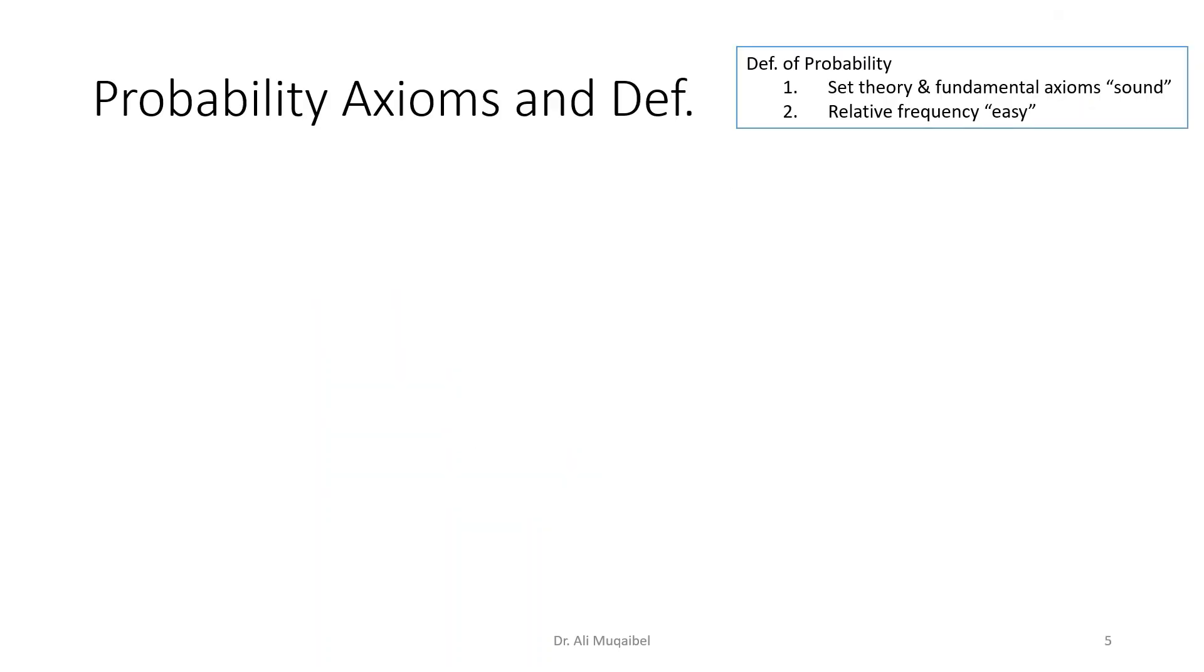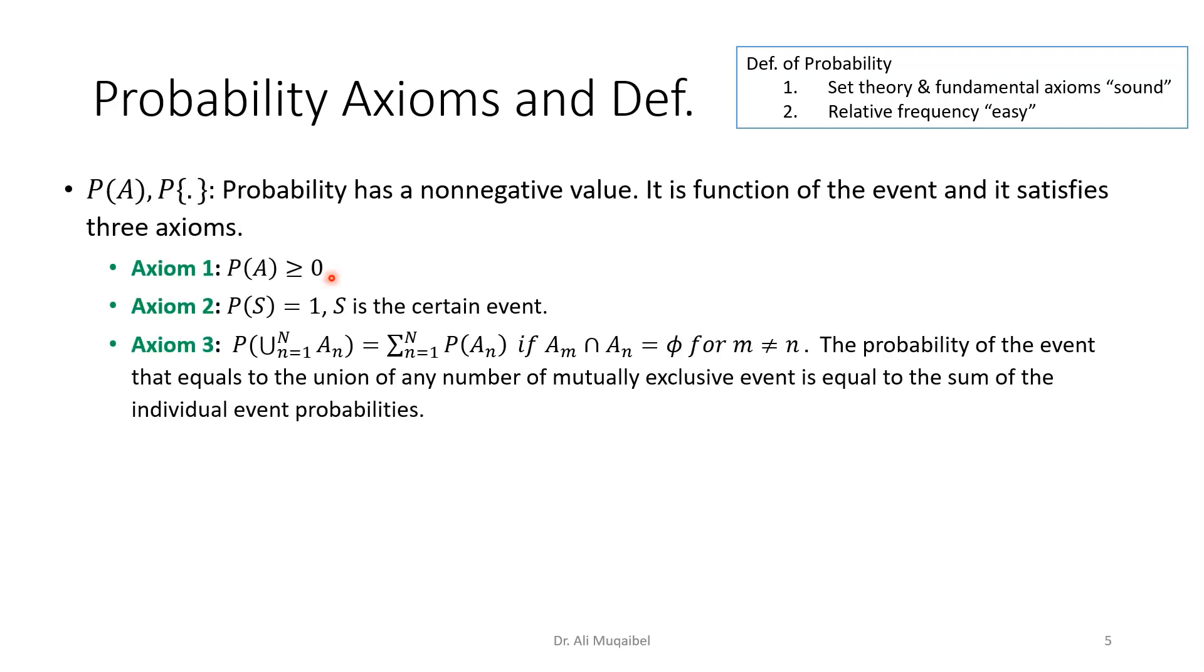Now, having said this, giving the meaning of experiments and events, we are ready to define probability. Recall that to define probability we have two ways: either we go to the sound way where we are exact and sure and use strong math, or we use a relative frequency which is easy to understand, maybe not as sound or solid as using the math, but it could give the required meaning.